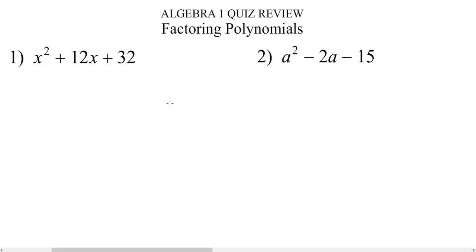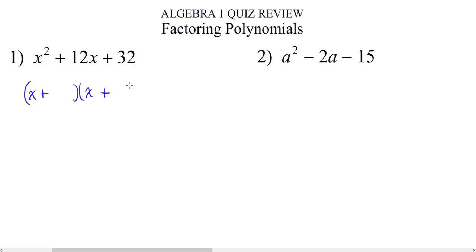Here's our quiz review for factoring polynomials. If we take a look at number 1, we have x squared plus 12x plus 32. We notice that our a value is 1 and that everything is positive, so our factors are going to be x plus something times x plus something because everything is positive.